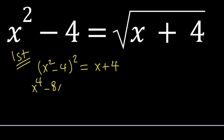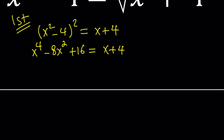Squaring gives us x to the fourth minus 8x squared plus 16 on the left. You probably know the formulas — if not, go ahead and check them out. Then I want to use two different approaches within this first method.